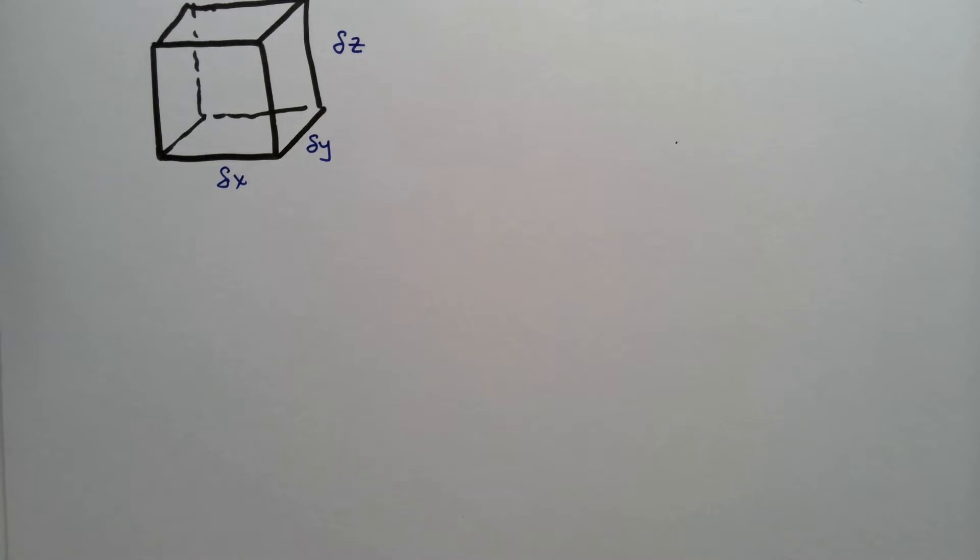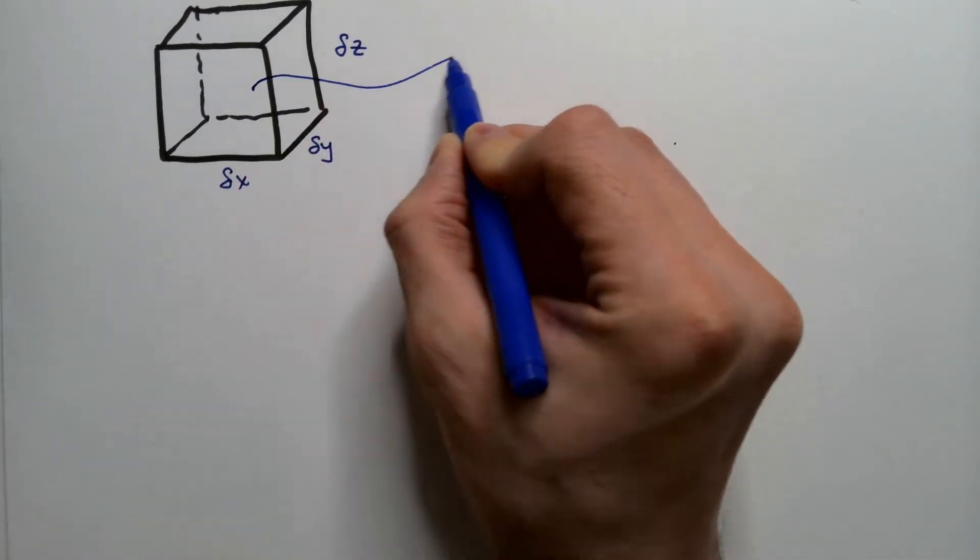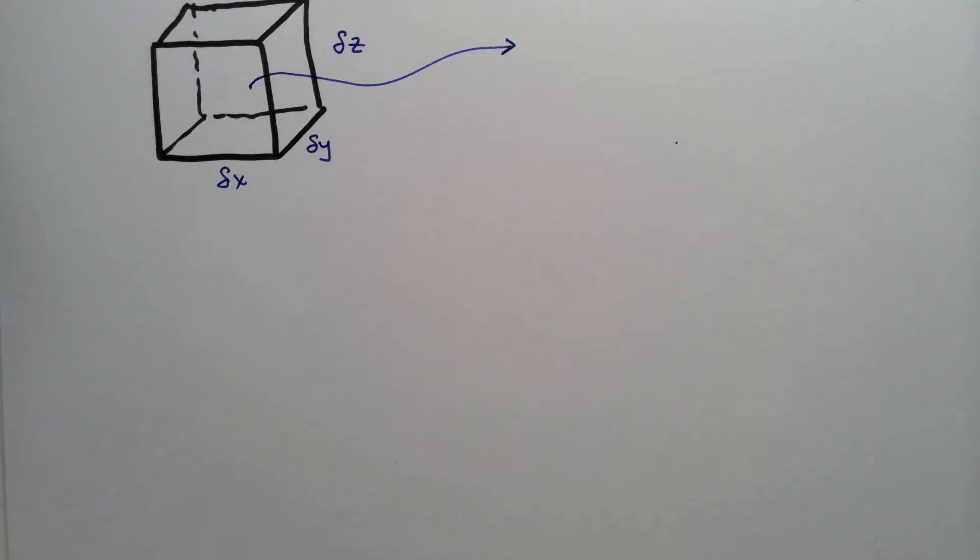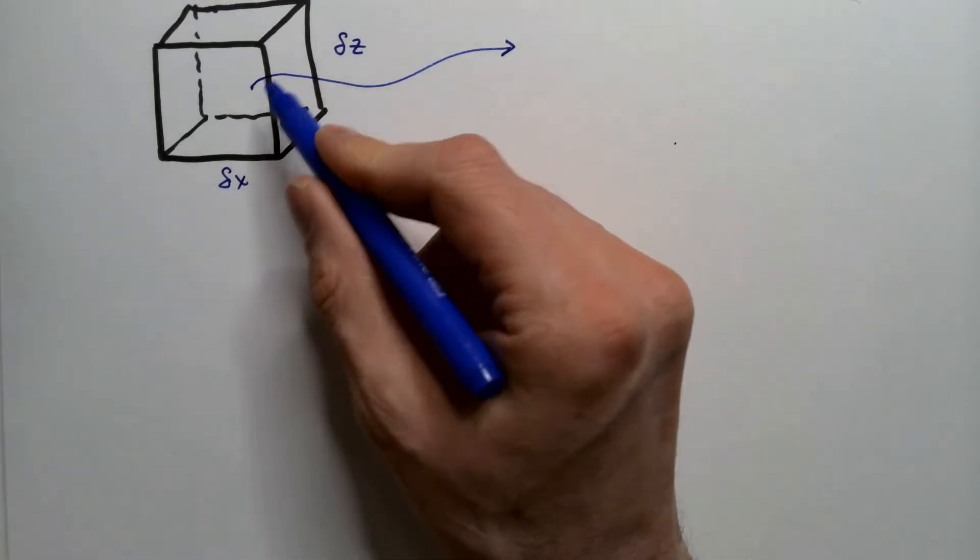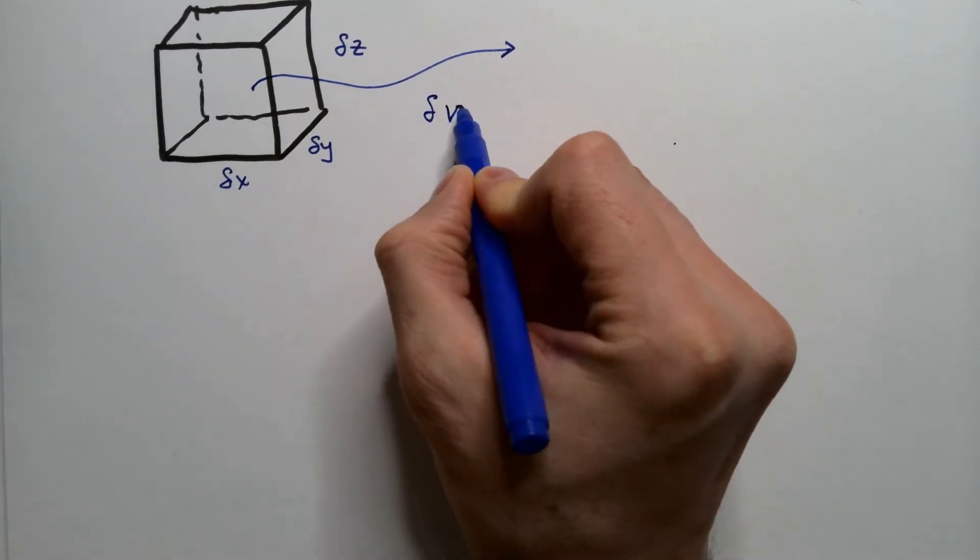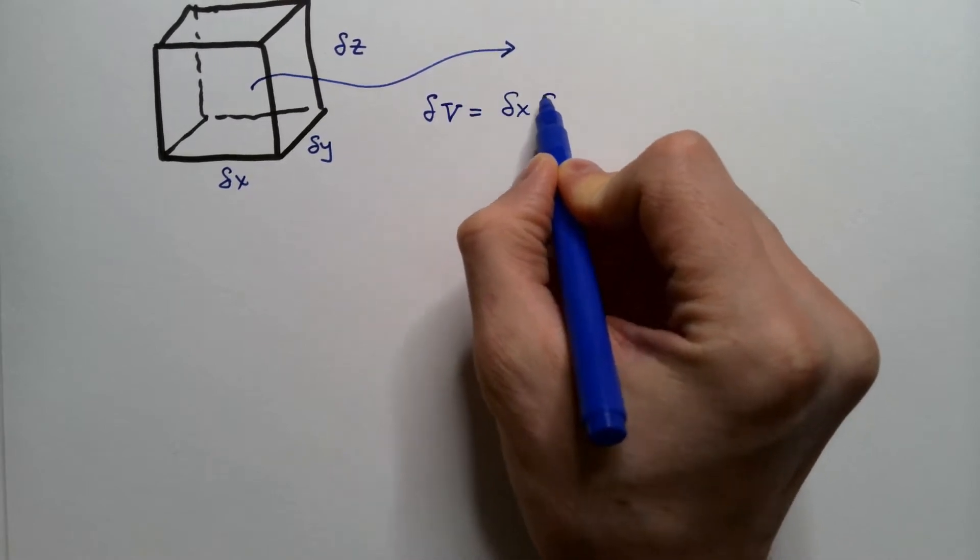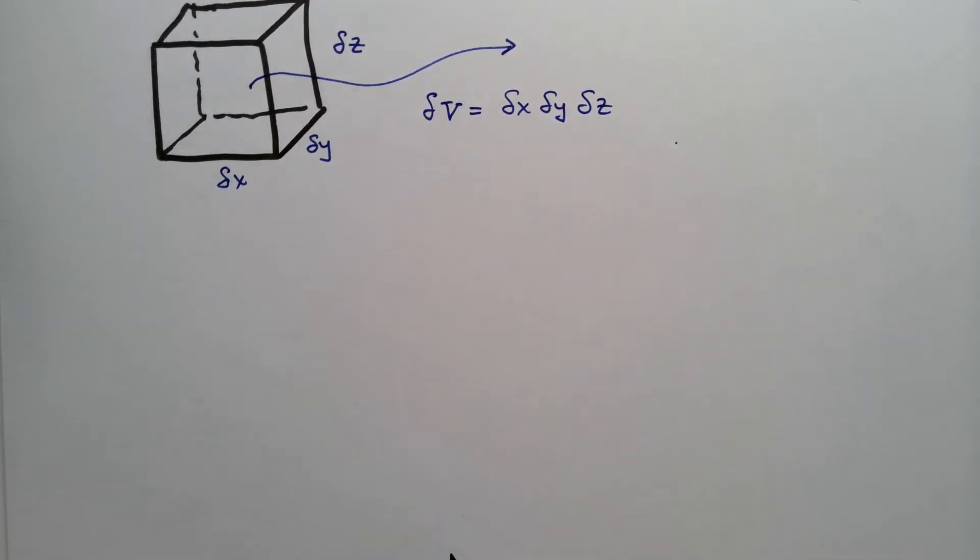Now this parcel of air moves around, in terms of volume, this parcel has volume delta V, that is delta x, delta y, delta z. That simple.